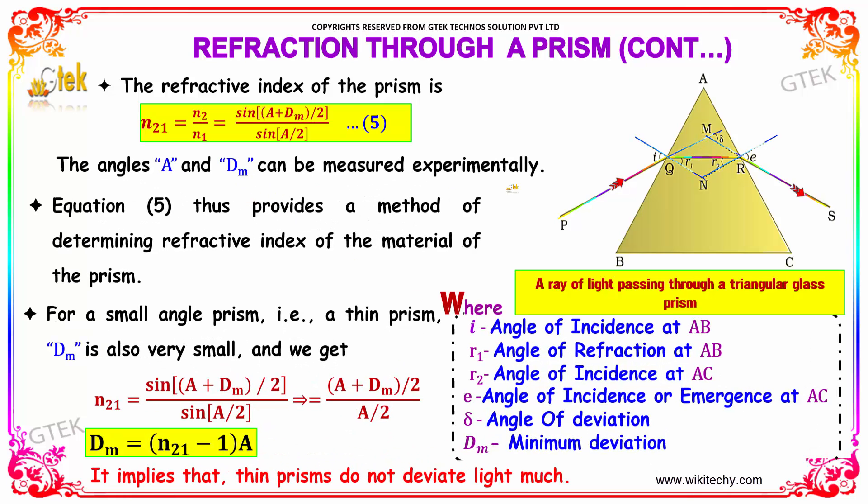We talk about the refractive index of the prism n21, which is nothing but n2 by n1. So replacing the value, that is sin of A plus dm by 2 divided by sin A by 2. The angles A and dm can be measured experimentally.